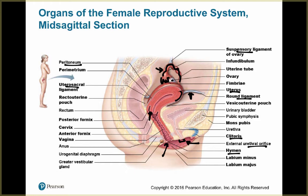The hymen is a mucosa near the vaginal orifice — an incomplete partition that gets broken during intercourse. You can also see the labia minora and labia majora we discussed earlier, as well as the vestibular gland, which is analogous to the bulbourethral gland.